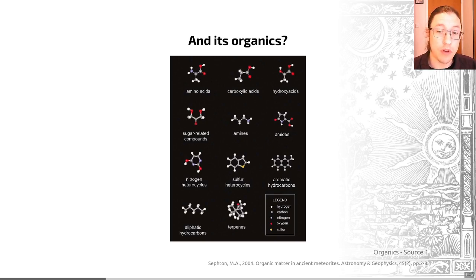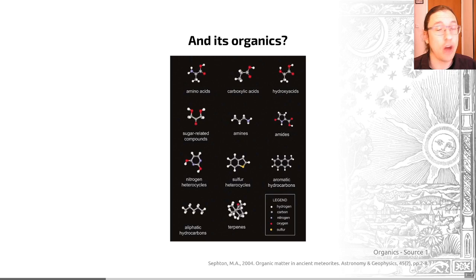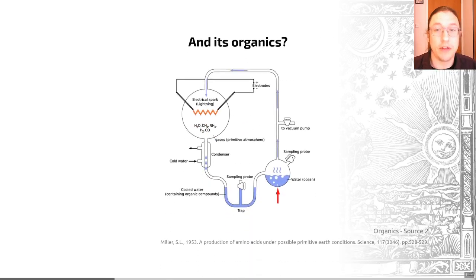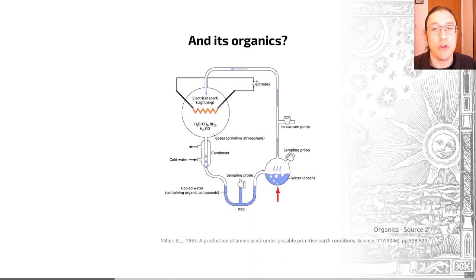We also know that these interplanetary bodies are rich in both methane and hydrogen cyanide, which may have been important when it came to the event of abiogenesis. The second potential source for these organic compounds is earthbound synthesis.